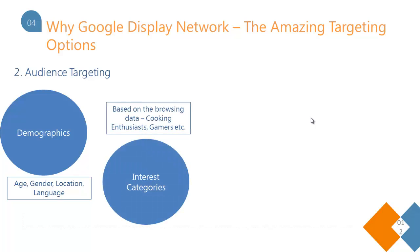Then come interest categories. Like topic categories, Google gives you options to choose from right on the interface. These interest categories are defined based on the past behavior of your audience — the kind of websites they visit and the content they've been consuming. Based on that, interest categories are formed, so you can target people based on what they've been doing online.